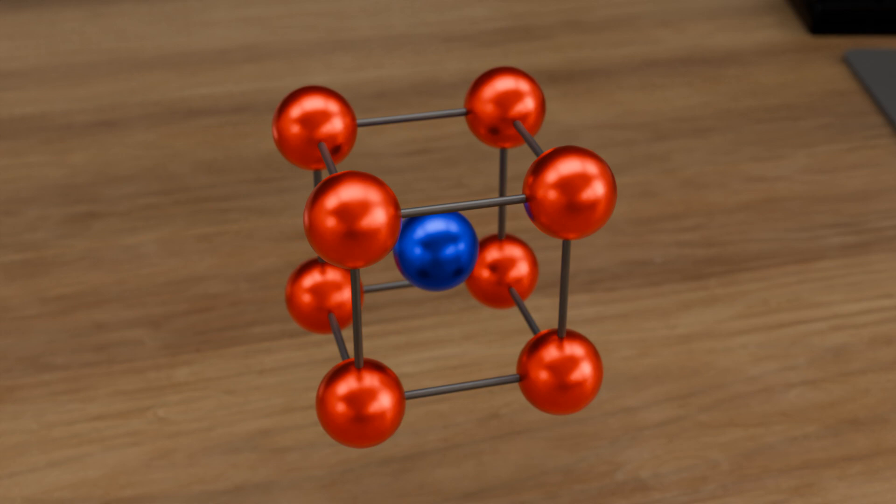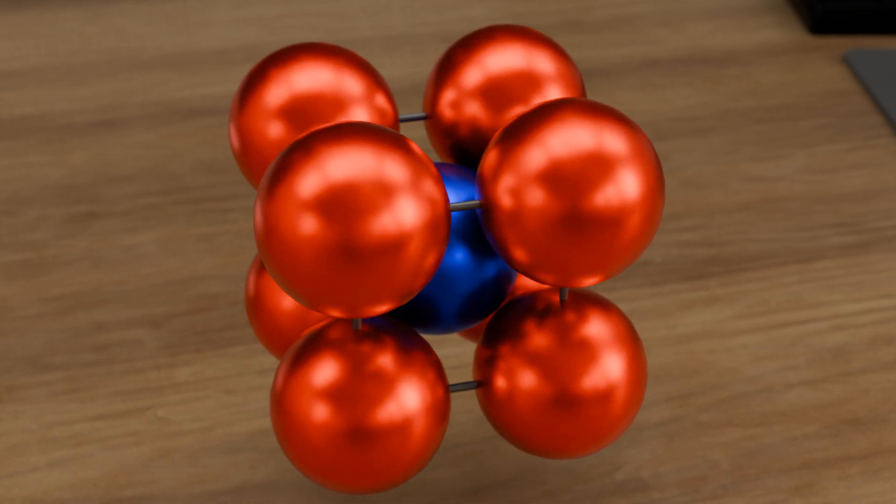In the body-centered cubic lattice, one atom is in direct contact with eight surrounding atoms. This number of direct neighboring atoms is also called the coordination number. The coordination number in the body-centered cubic lattice structure is therefore eight, whereas in the simple cubic lattice it is six.